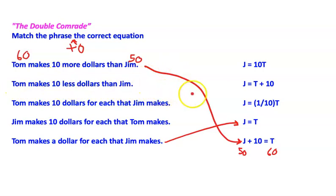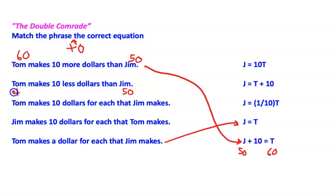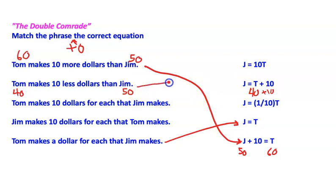That makes the next one a little easier: Tom makes ten less than Jim. Let's say Jim makes fifty — if Tom makes ten less, Tom would make forty. So Tom plus ten equals Jim: forty plus ten equals fifty. This phrase matches that equation right there.